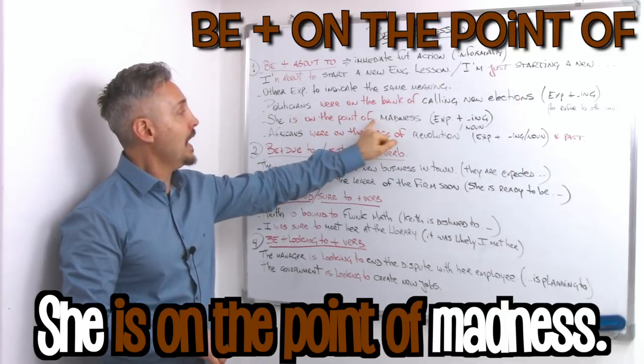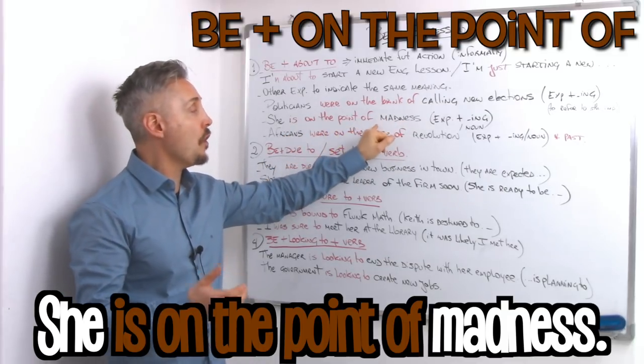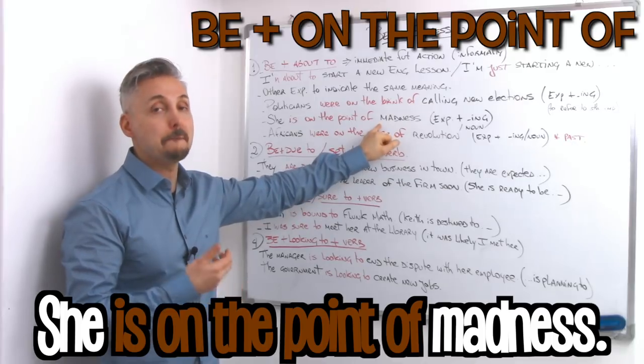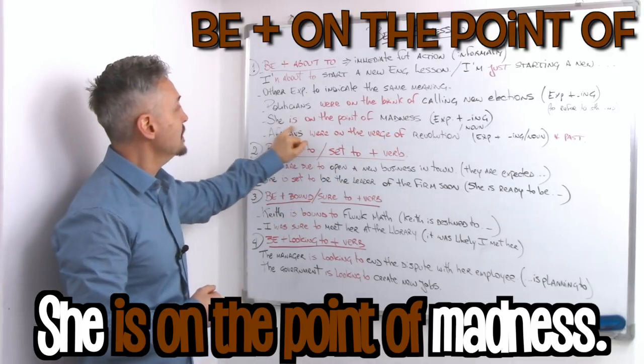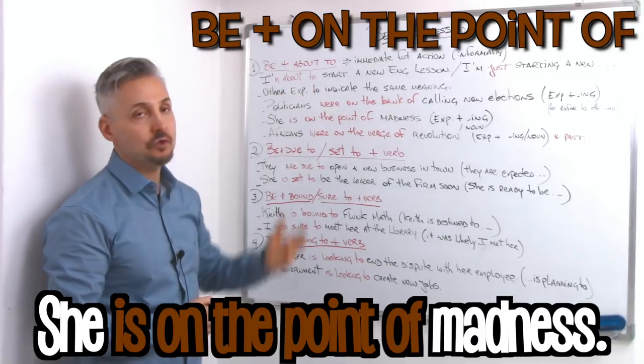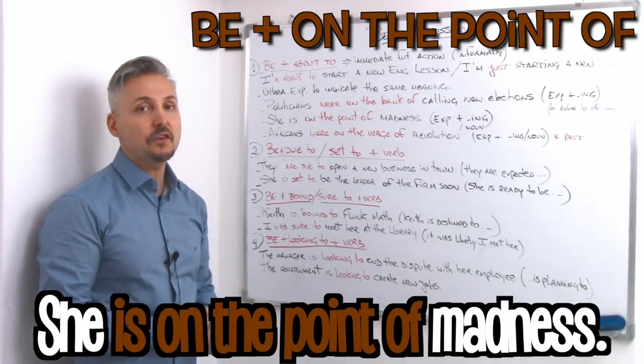So we have an ing verb or in this case a noun, madness. So she's on the point of madness. She's about to, it's an immediate future. This is what it means.